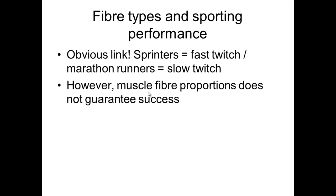This indicates that to be a top-line sprinter, you need fast-twitch fibers, and for long-distance runners, you'd need slow-twitch. However, muscle fiber proportions don't always guarantee success, but it's a reasonable indicator. You would expect to find that the majority of athletes in the world's top ten for the 100 meters have a higher proportion of fast-twitch fibers, and the top ten marathon runners to have a higher proportion of slow-twitch fibers.